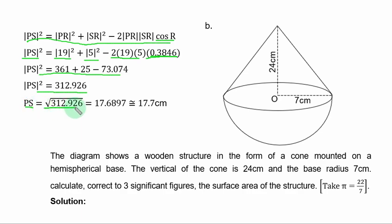So, you have square root of this and that is 17.6897. To one decimal place, you have 17.7 centimeters.